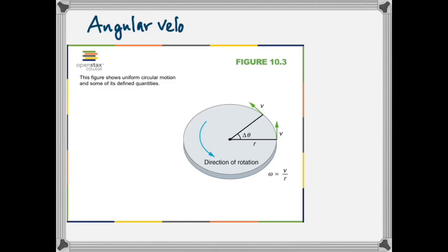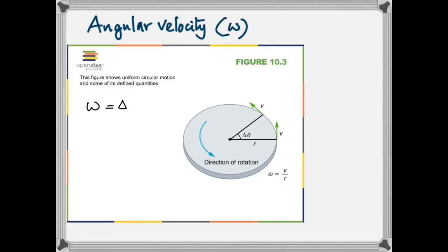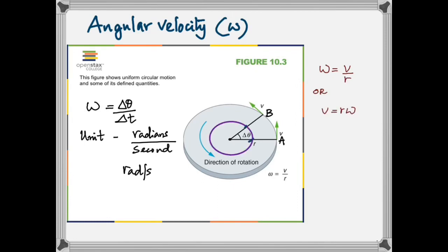The first concept in rotational motion is angular velocity. When an object rotates counterclockwise, starting from one position and moving to another, the radius completes an angle Delta Theta in a certain time. Angular velocity is defined as that angle divided by the time, and its unit is radians per second. Angular velocity is related to linear velocity by the formula: angular velocity equals linear velocity divided by radius.